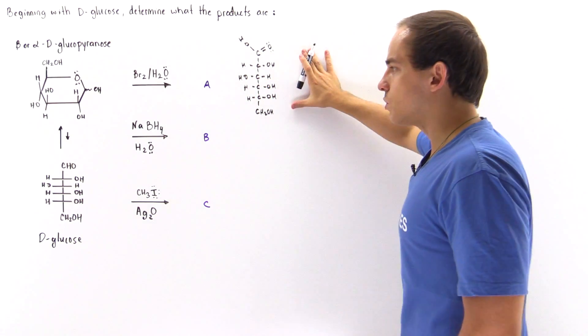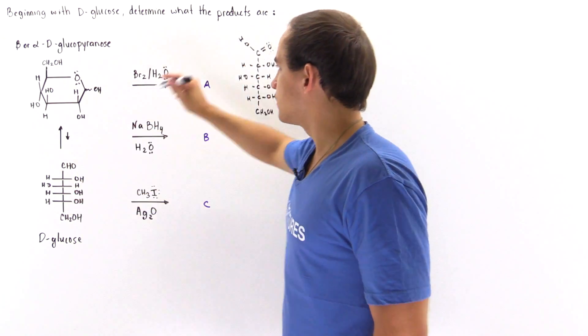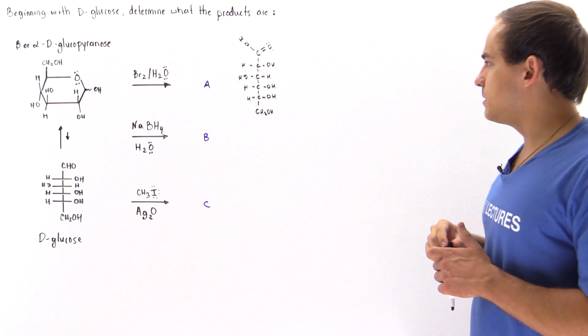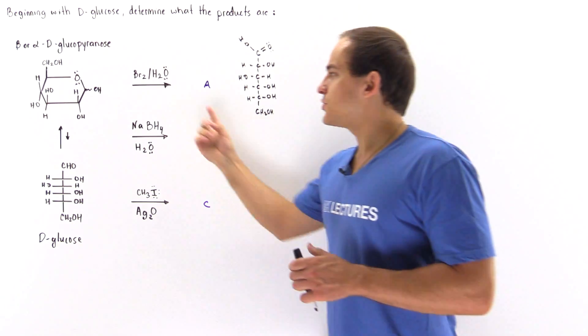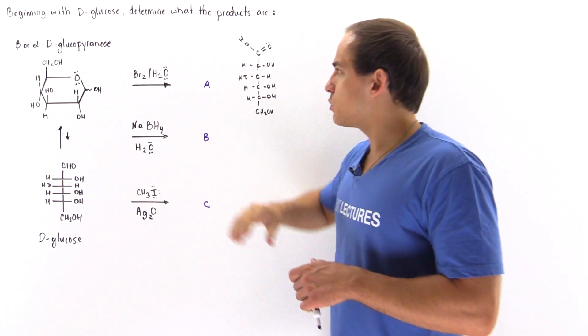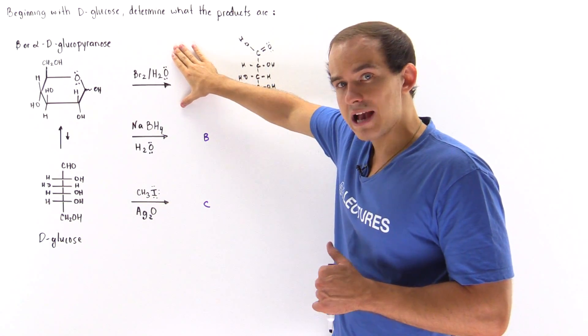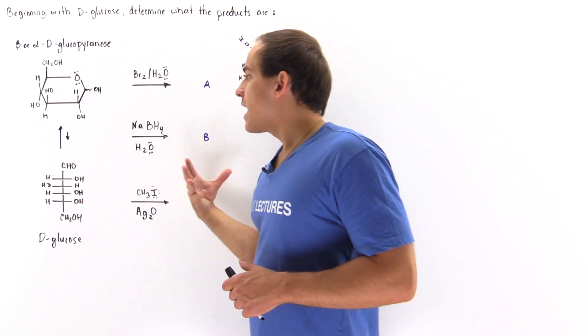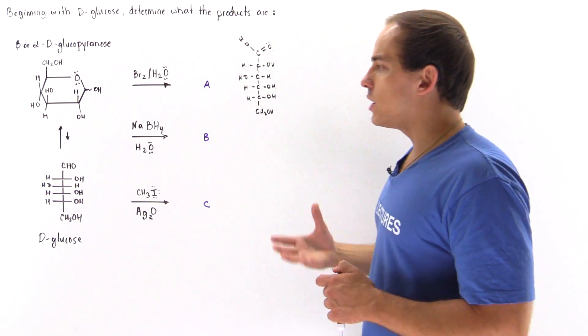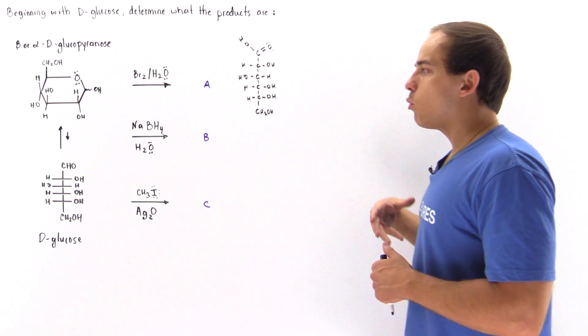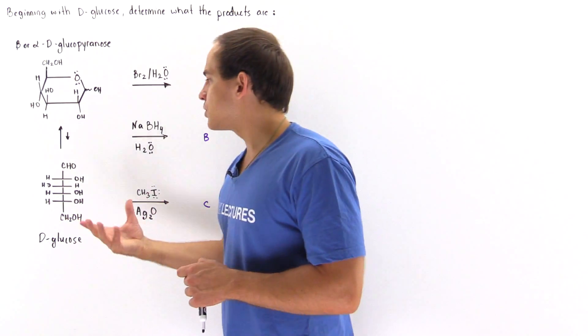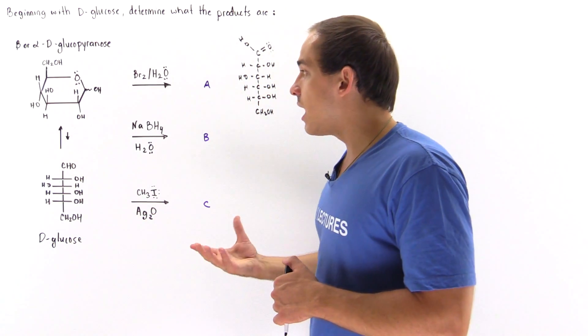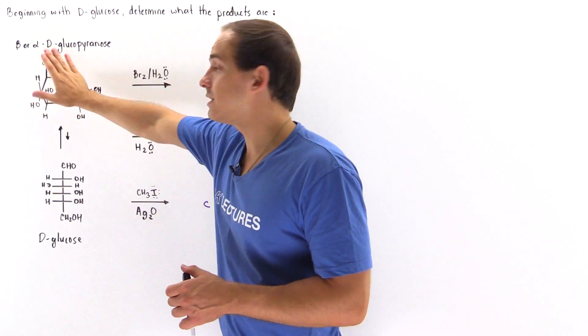Now let's move on to product B. So what is this reaction? This was an oxidation reaction, and this is our reduction reaction. Basically here our molecule, the D-glucose, will be reduced. Once again, the only section that can actually be reduced is the aldehyde, and the aldehyde is found on our open chain and not the closed chain.